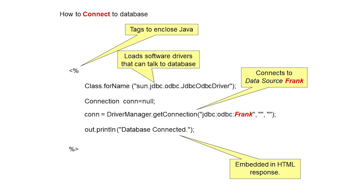The first line is the JSP code written inside the scriptlet tags. The first line is: Class.forName("sun.jdbc.odbc.JdbcOdbcDriver"). You have to write this line — it will load the software driver that can talk to the database. We are loading the JDBC-ODBC driver. The complete path is required because the vendor is Sun Microsystems, so it is sun.jdbc.odbc, and inside that package we have the JdbcOdbcDriver.